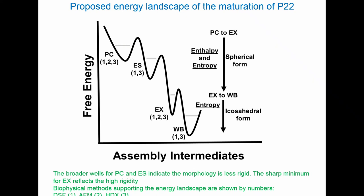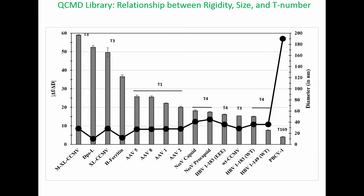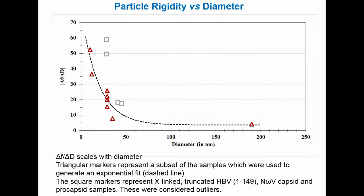What we don't know yet is really how high are these activation barriers between these different metastable states. We've also looked at a whole library of particles using this quartz crystal microbalance technique — looking at our rigidity, our frequency dissipation ratio, seeing our different T numbers of all the particles we've looked at and how this relates to diameter. This is one of these giant algal viruses, PBCV1. What we can see essentially is if we graph this, while it's not a perfect fit, we're seeing at least in this one measure of global rigidity of these particles some sort of semi-exponential fit — trying to tie it all back together to getting the simple answer.